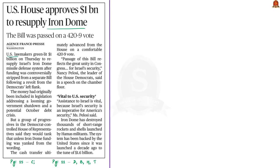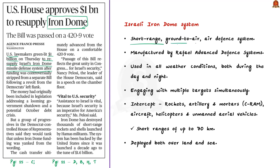The United States has recently decided to provide one billion dollars to resupply Israel's Iron Dome missile defense system. The Iron Dome is a short-range ground-to-air defense system manufactured by Rafael Advanced Defense Systems. Its development can be traced back to 2006, when the Israeli-Lebanon war saw Hezbollah fire thousands of rockets into Israel. Following that event, Israel announced it would develop a new air defense system to protect its cities and people.